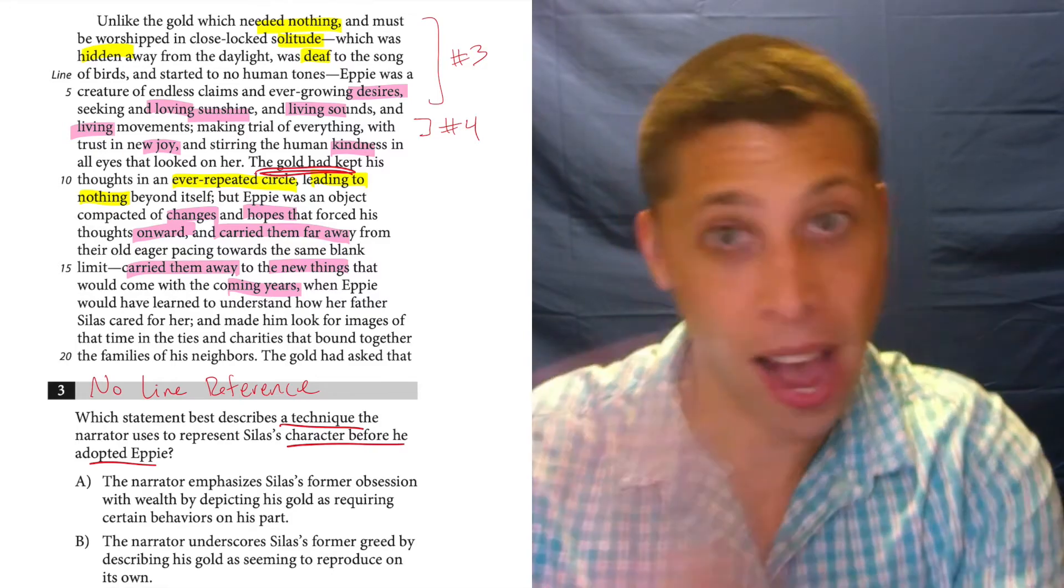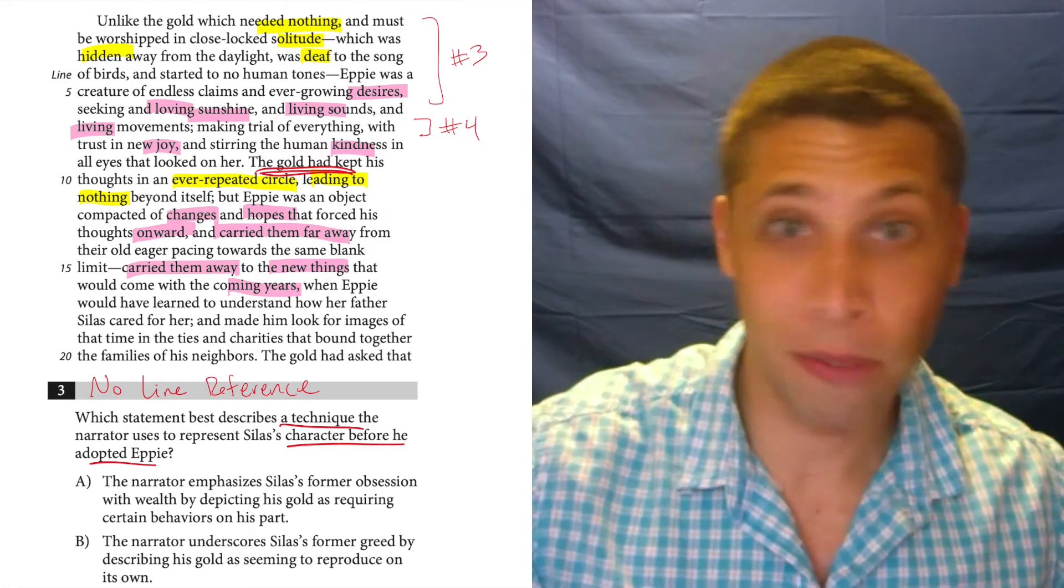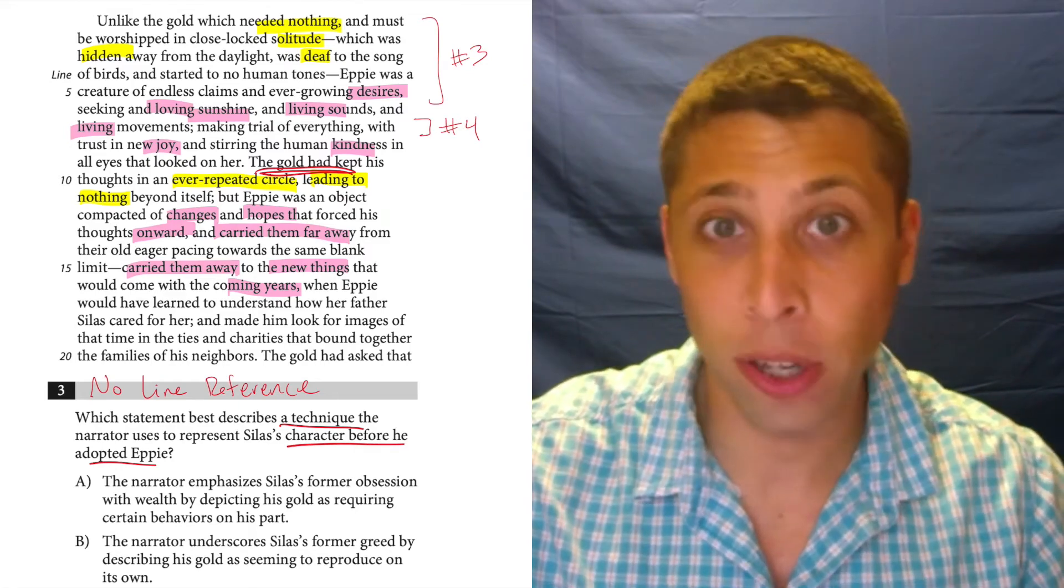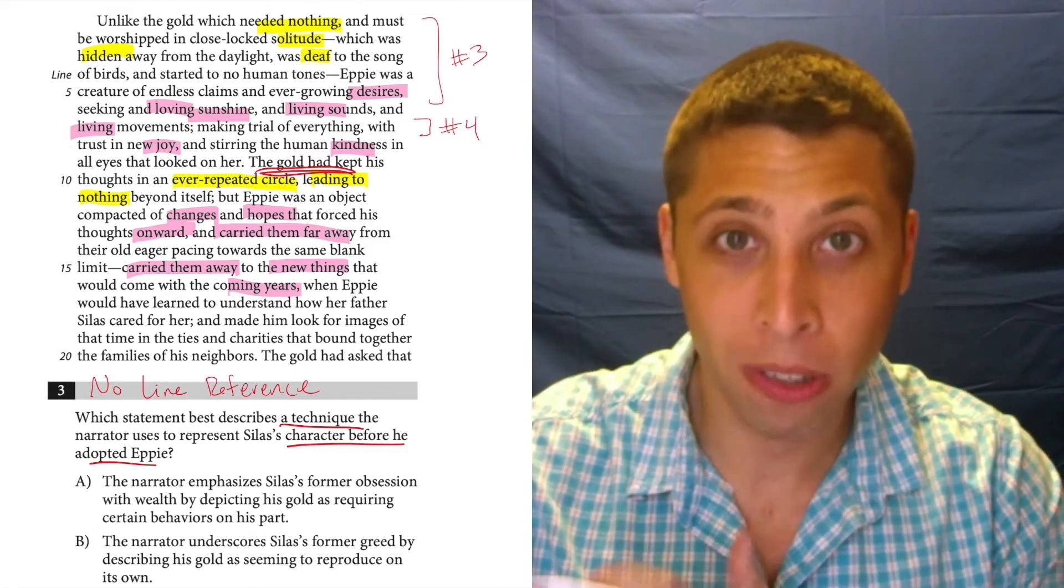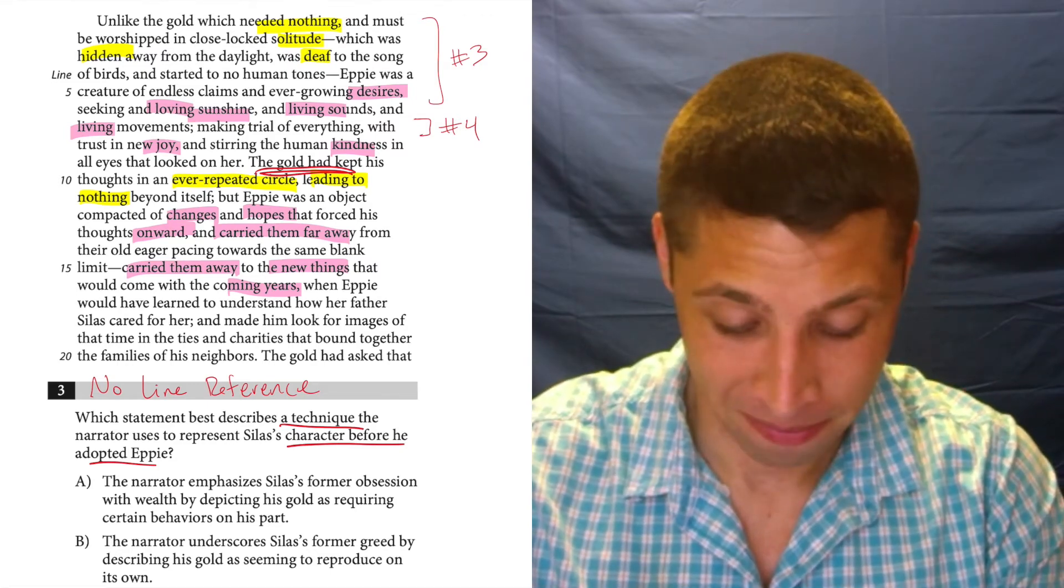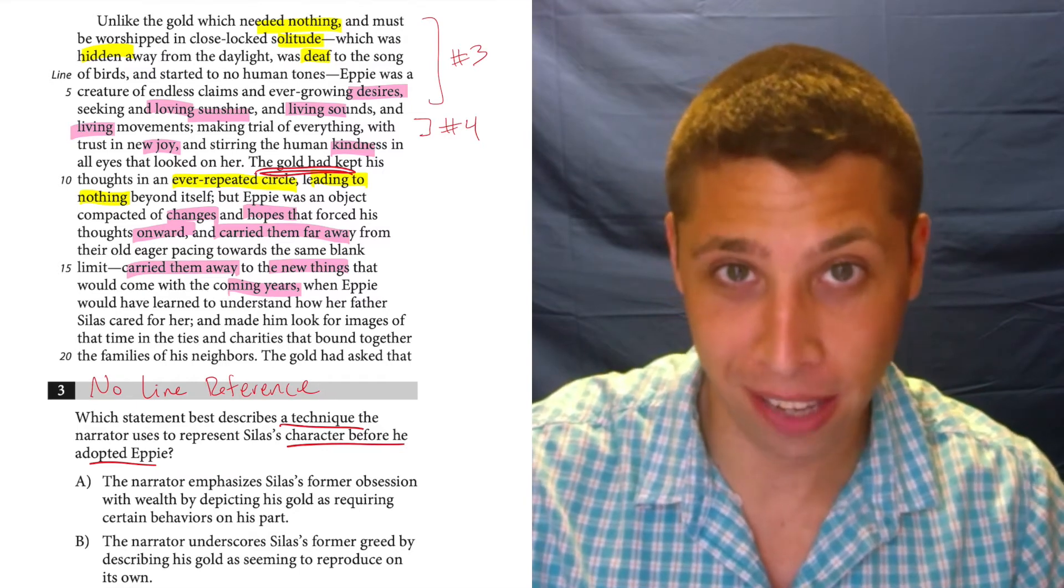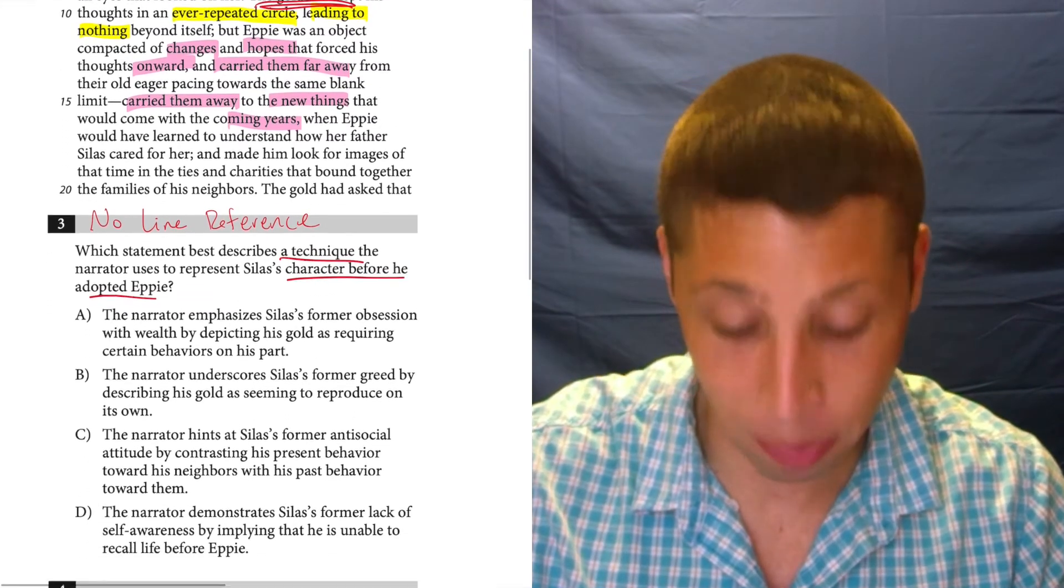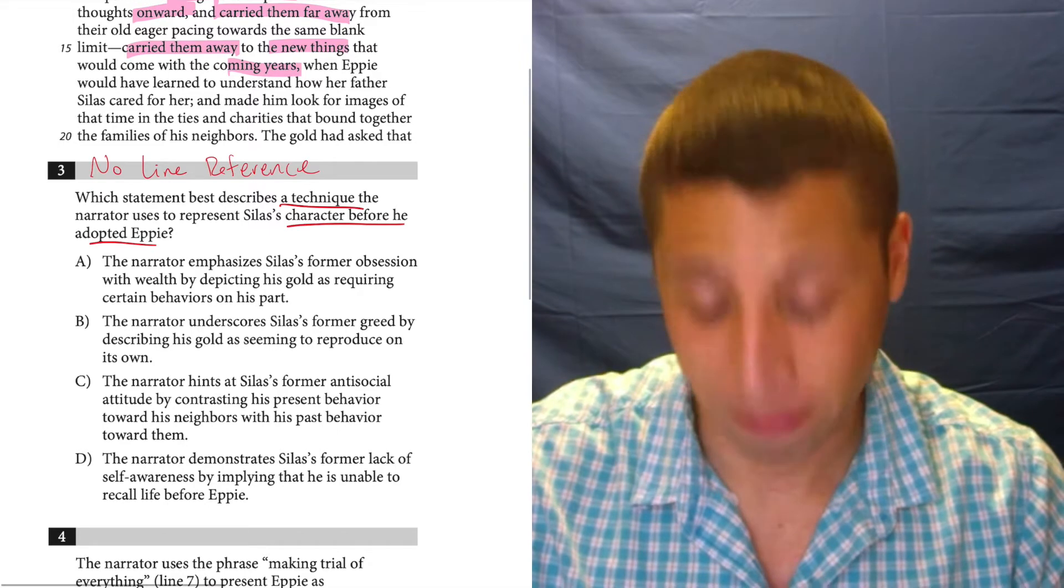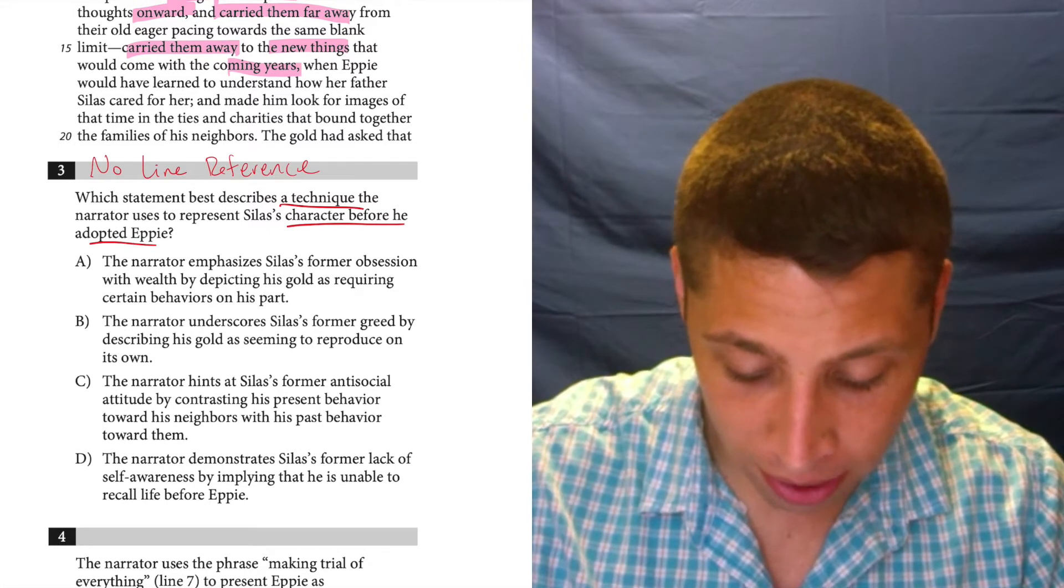So again, the past is bad. The future, the present with Epi is good. Ever repeated circle leading to nothing sounds pretty grim. Hopes, dreams, carrying them away, coming years, new things. That's a clear contrast, repeated. So we can use that.